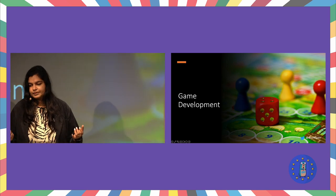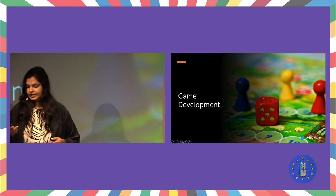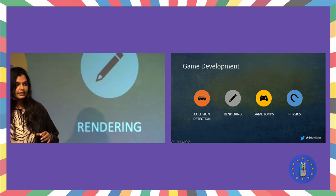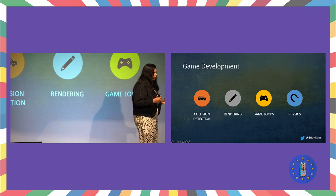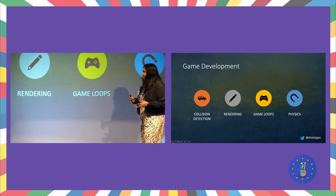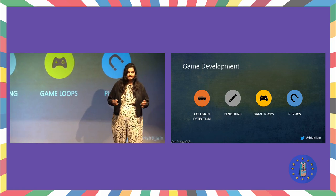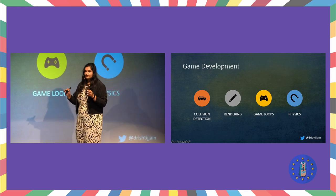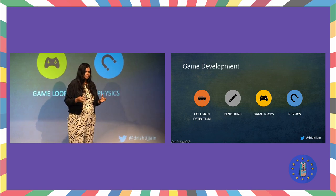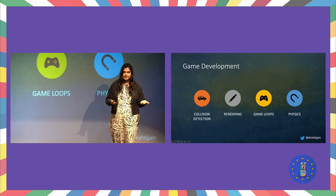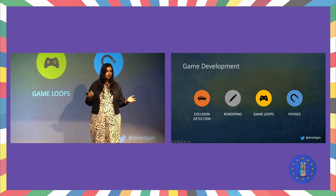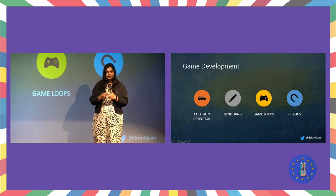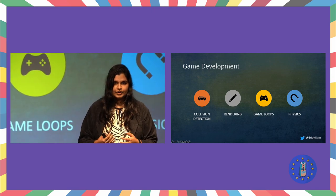Before we jump into everything about games, there are four key concepts to remember when developing a game. The very first one is collision detection. In any kind of game — multiplayer or single player — you need to define what should happen when two objects or components of your game interact with each other. That is an edge case you have to handle.